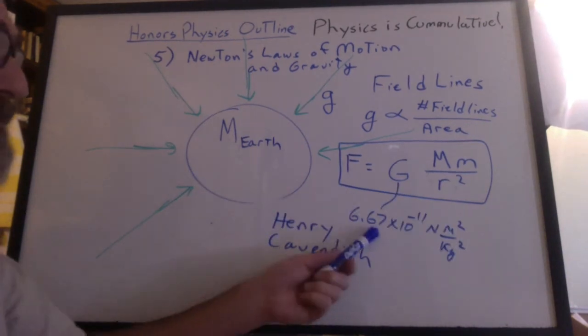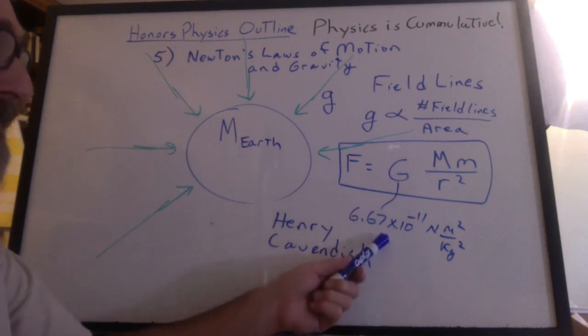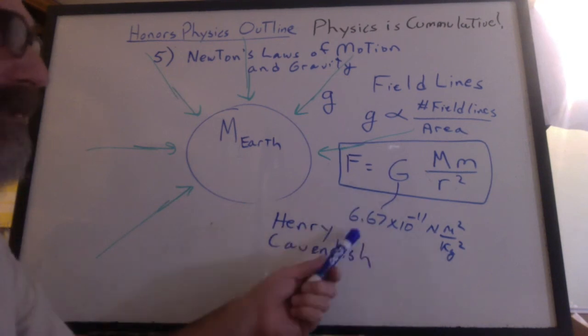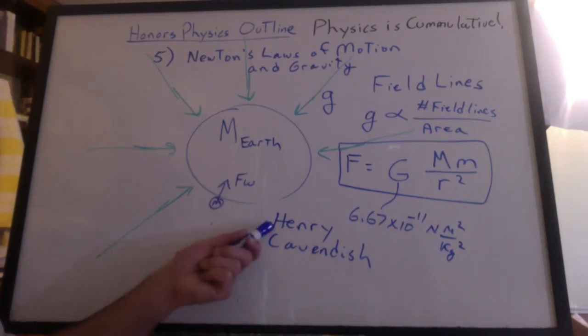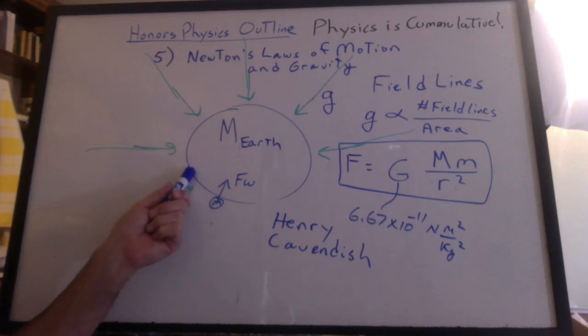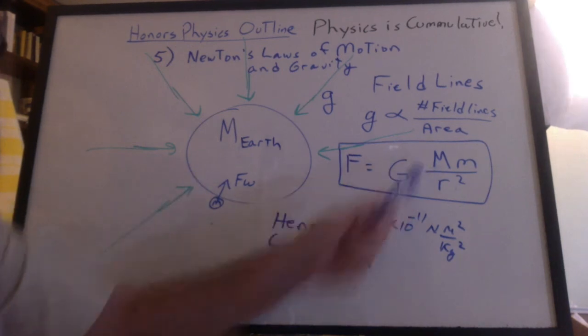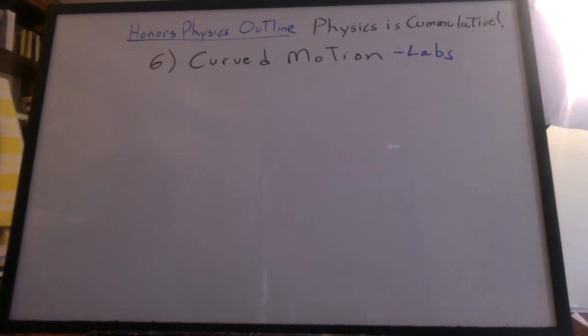Henry Cavendish was the guy who measured G, capital G. Newton couldn't do it. It was too small of a number. Didn't have the good lab technique yet. So the first thing he did was he weighed a mass. And he knew the radius of the Earth. And he was able to go calculate the mass of the Earth.